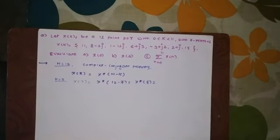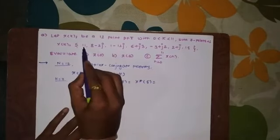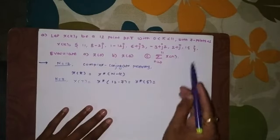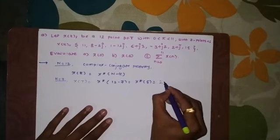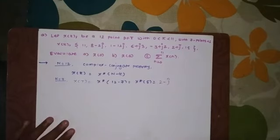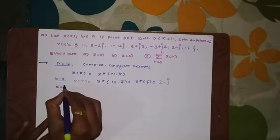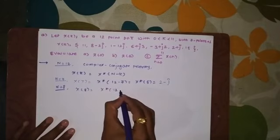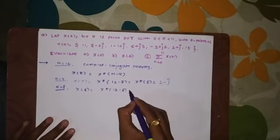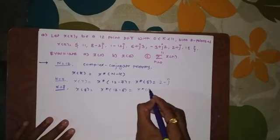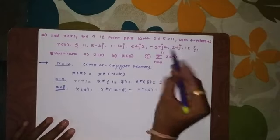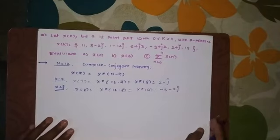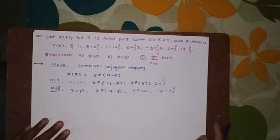X7 is the complex conjugate of X5. X5 is 2 plus J, so its complex conjugate becomes 2 minus J. Next, for K equal to 8, we write X8 as X complex conjugate of 12 minus 8, which is X complex conjugate of 4. X4 has a real term as-is and we change the sign of the imaginary term to get the complex conjugate.